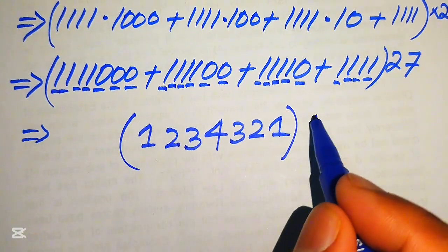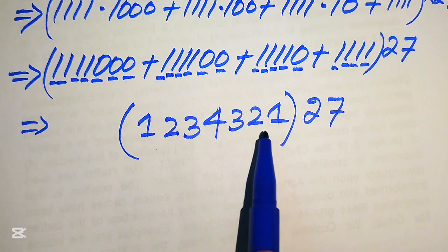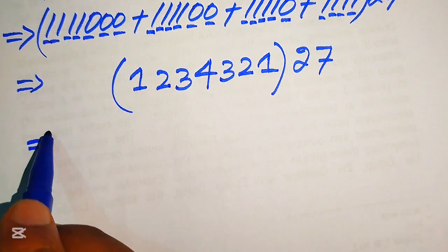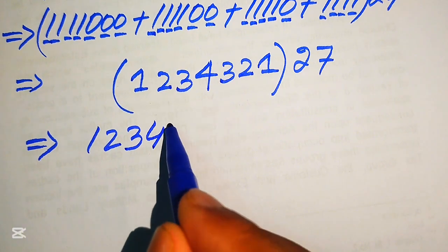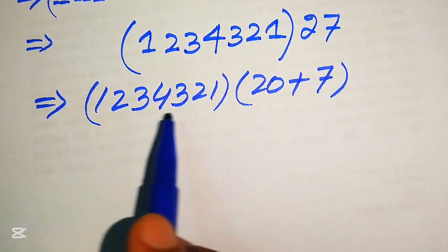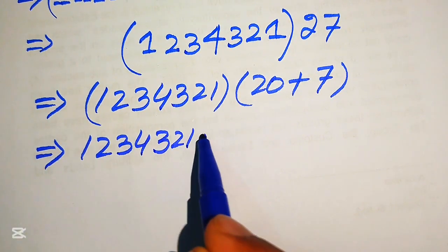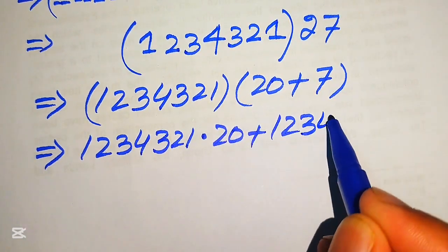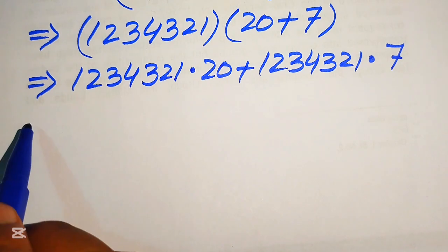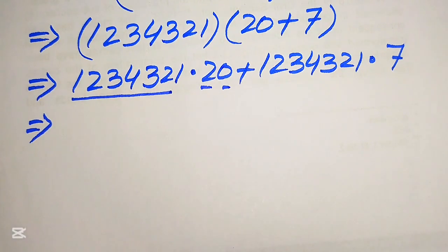So we have the very nice number 1234321. We multiply this by 27. To do so, we write 27 as 20 plus 7. It becomes 1234321 multiplied by 20 plus 1234321 multiplied by 7. We compute each part and then add to get our final answer.